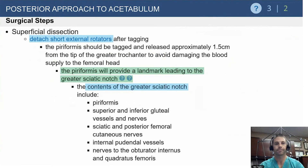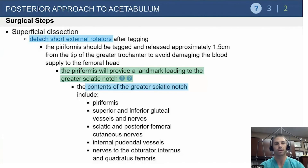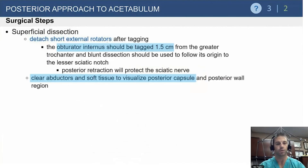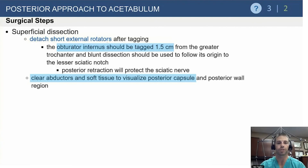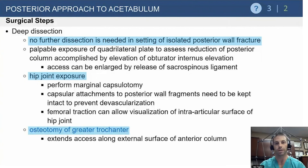Watch for bleeders as you release further in a cephalad direction - you can split bluntly about five centimeters. Tag and release the external rotators, avoiding release directly on the bone; leave about a finger breadth or 1.5 centimeters off the bone to help protect the femoral head blood supply. The piriformis runs directly underneath to the greater sciatic notch, making it a great place to seat a retractor. As you continue distally, it is the obturator internus and short external rotators - not the piriformis, which is more posterior - that protect the sciatic nerve.